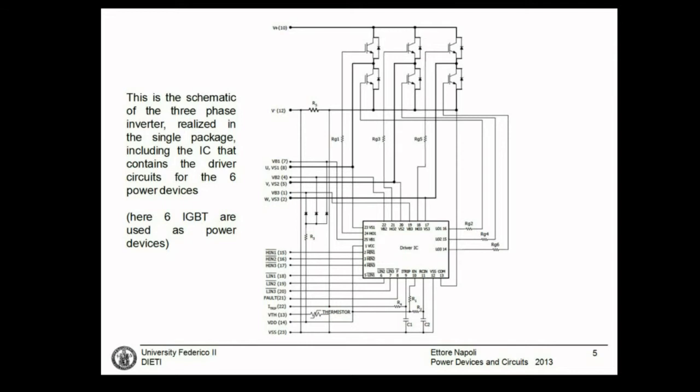Instead of having two branches like in a bridge converter, we have three branches — one, two, and three. This means we need six power devices. These are IGBTs, not MOSFETs — the symbol is different; we will study this device later. Each of them has the anti-parallel diode, giving a total of 12 power devices. There is also the IC driver that provides the pulses to the various gates, plus bootstrap voltage. There are gate resistances, a thermistor probably for short-circuit protection, and other components.